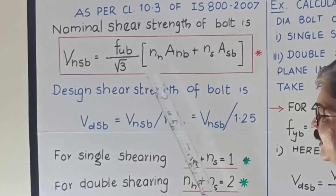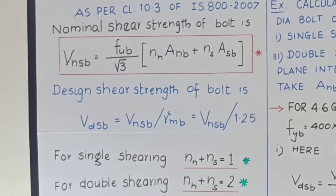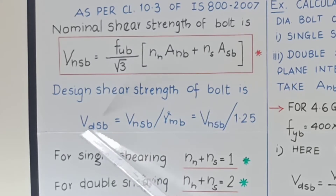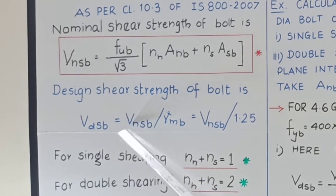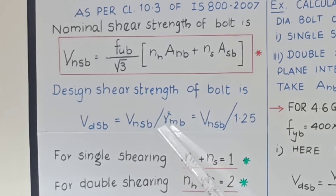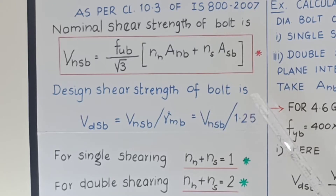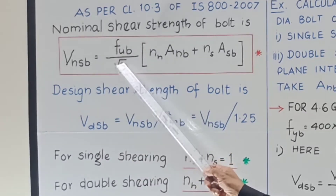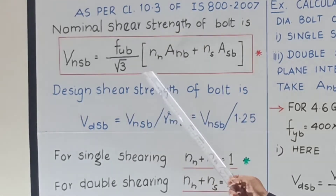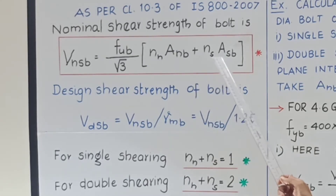When we want to calculate the design shear strength, we apply the partial factor of safety. Therefore, design shear strength V_dsb = V_nsb divided by the partial factor of safety for bolt (γ_mb). For bolts, γ_mb = 1.25. Therefore the final formula for design shear strength is: V_dsb = f_ub / (root 3 × 1.25) × (n_n × A_nb + n_s × A_sb).